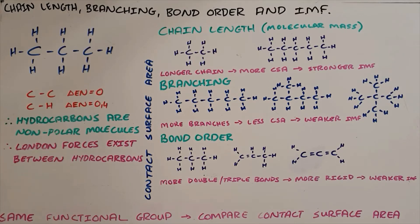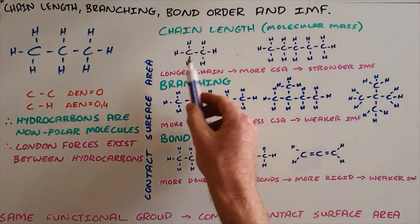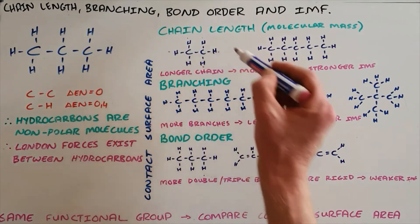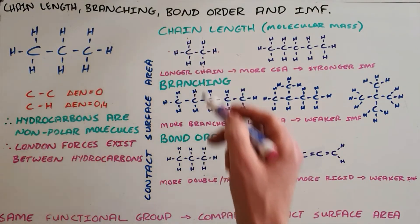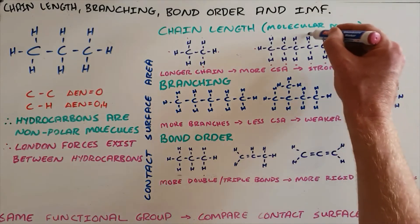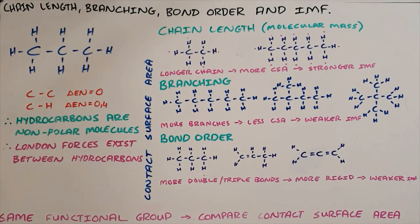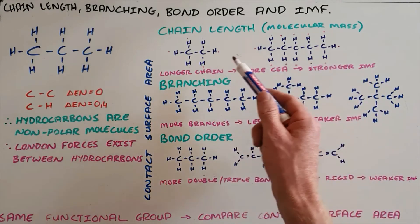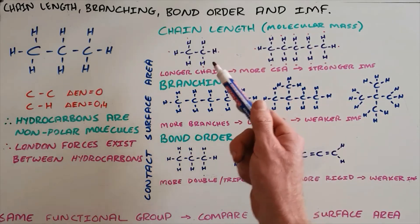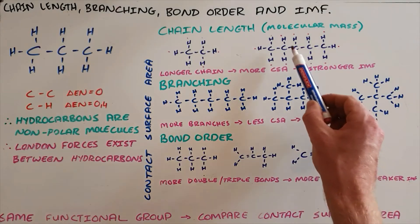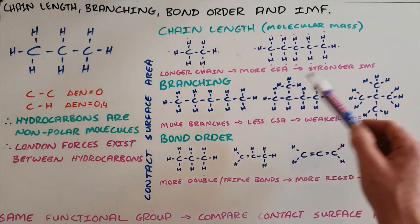There are three properties said to influence the contact surface area. The first is chain length, also sometimes referred to as molecular mass. A smaller molecule may have only six sites where intermolecular forces could exist — where temporary dipoles of London forces could be induced — compared to a bigger molecule that has twelve sites for potential London forces. As a result, a longer chain length gives a greater contact surface area, and therefore stronger intermolecular forces. Both molecules only have London dispersion forces, but the longer one has more opportunities for those forces to exist and as a result those forces are stronger.